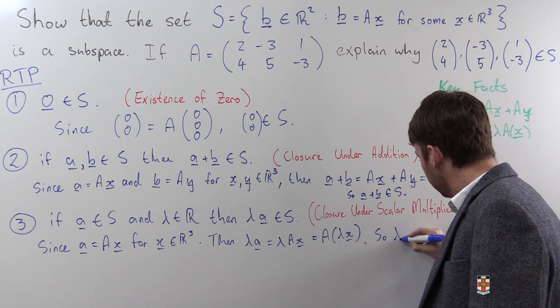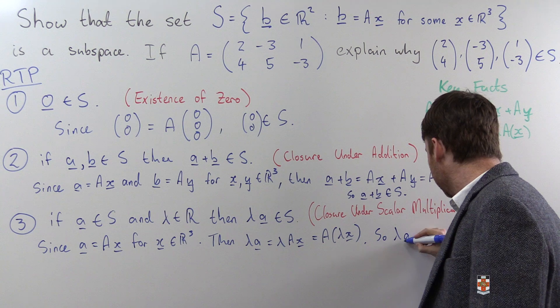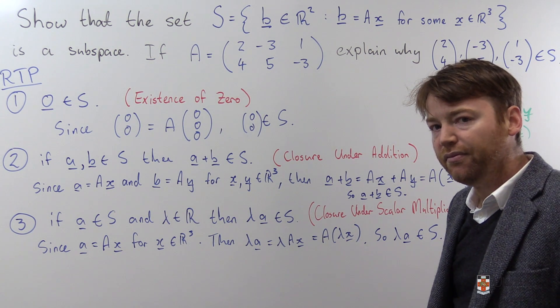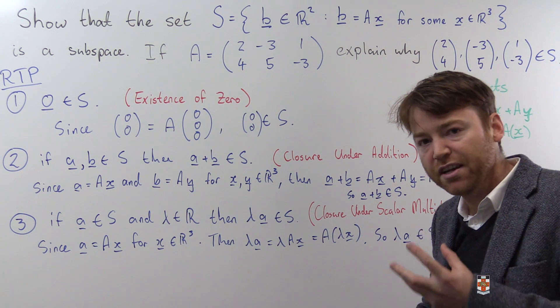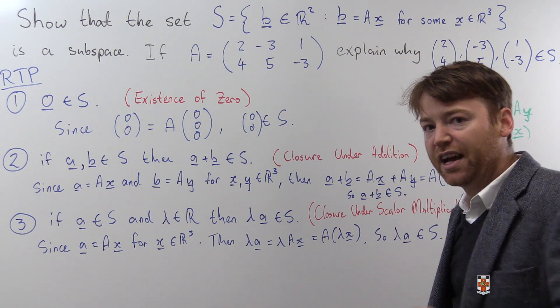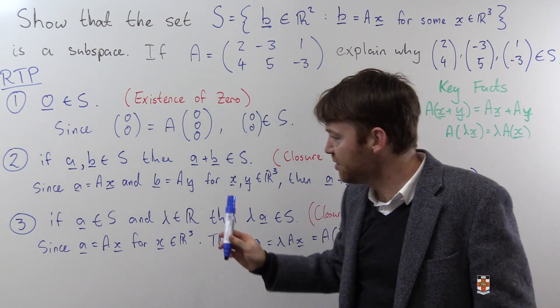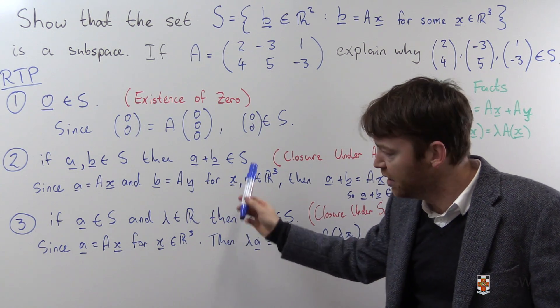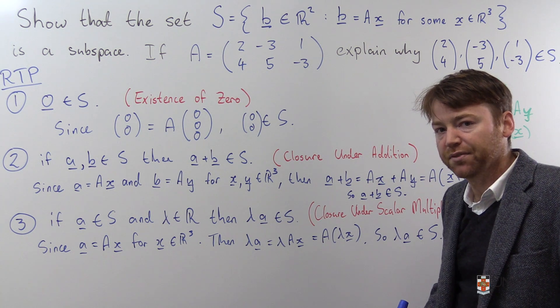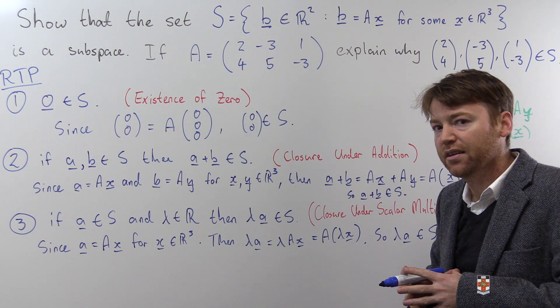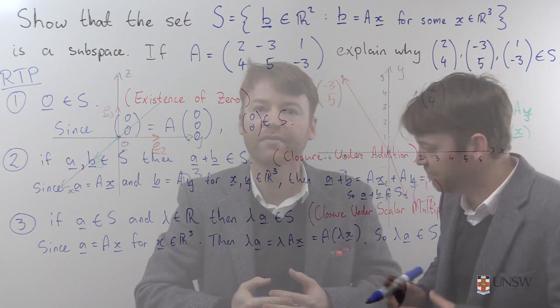So lambda A is an element of S. Hence we have shown the three remaining vector space axioms that were not inherited from R2. We showed that 0 is in S, we showed that S is closed under addition, we showed that S is closed under scalar multiplication. You are now able to conclude that S is a vector space by the subspace theorem.